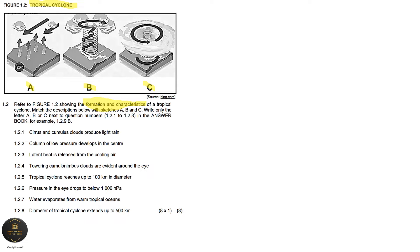Always follow the instruction guidelines when answering examination questions. Question 1.2.1: Cirrus and cumulus clouds produce light rainfall - the answer is B. In B we have our cirrus and cumulus clouds, so it's the immature stage where the system starts strengthening. Question 1.2.2: A column of low pressure develops in the center - that is also B, still in the immature stage where we start having the development of low pressure at the center of the system.